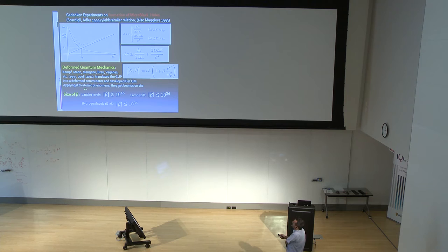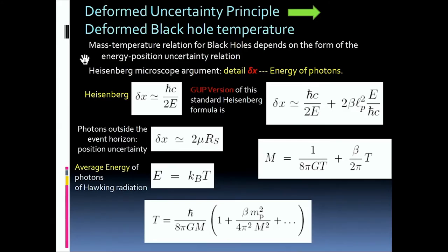For example, they have computed using these deformed quantum mechanics, Landau levels, or the Landau shift, or the hydrogen levels, and these are the bounds that they found on this beta. Using this deformed uncertainty principle, you can compute many things. In particular, you can compute also a deformation of the Hawking temperature.